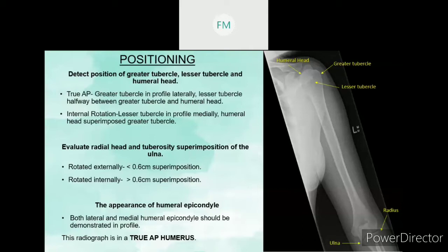If the patient has been rotated externally, there will be less than 0.6 cm superimposition. Otherwise, if the patient has been rotated internally, the superimposition will be more than 0.6 cm. So we have to measure the superimposition between the radial head and the ulna — radial head and tuberosity.